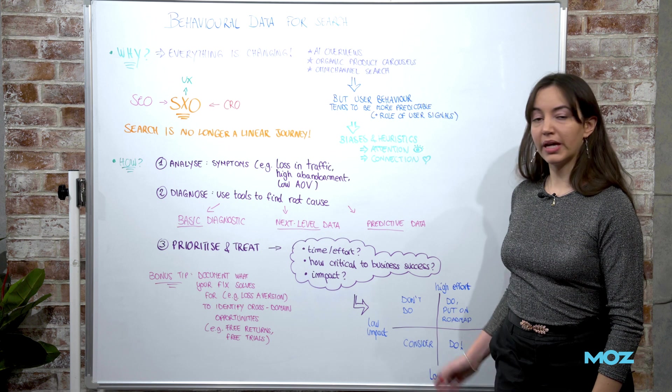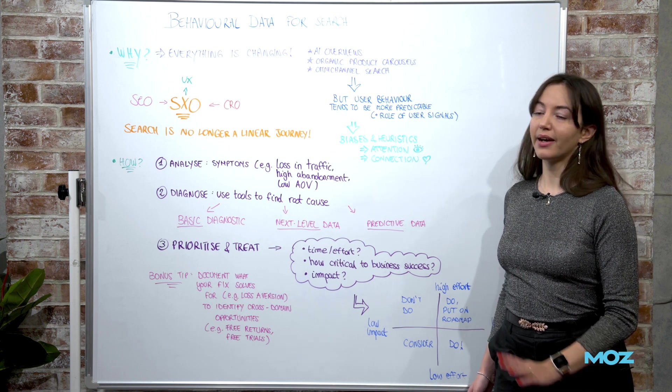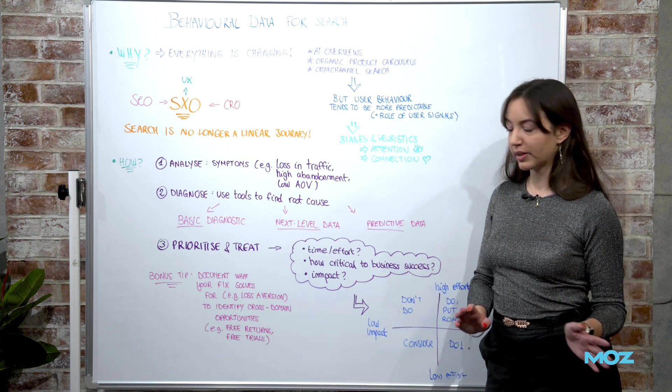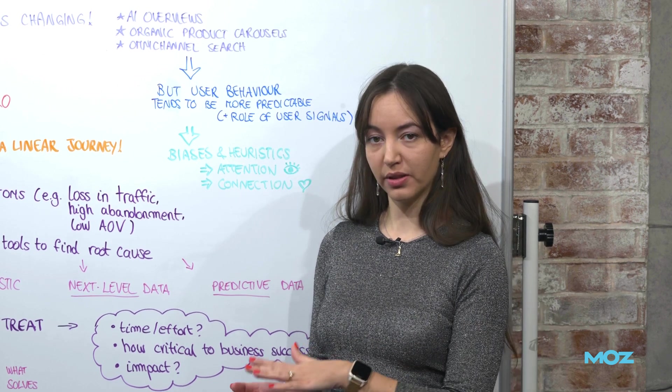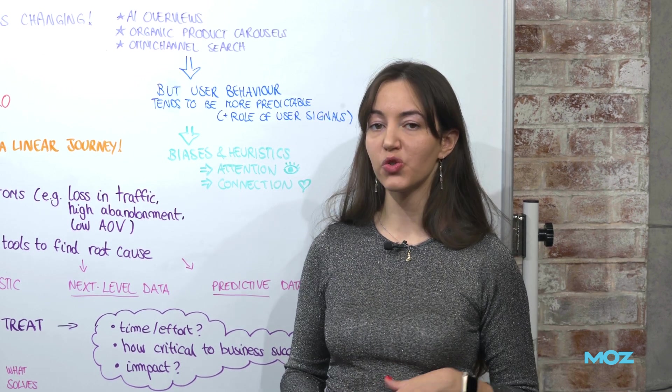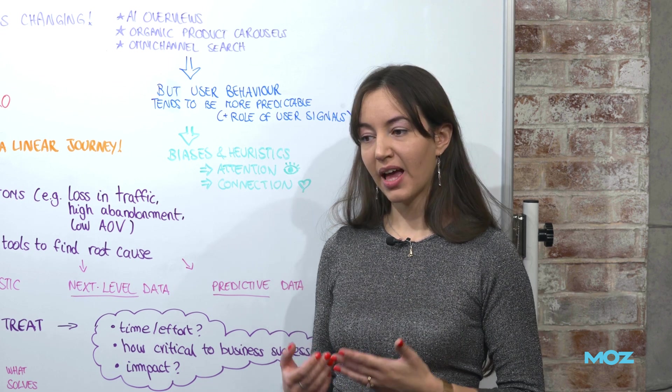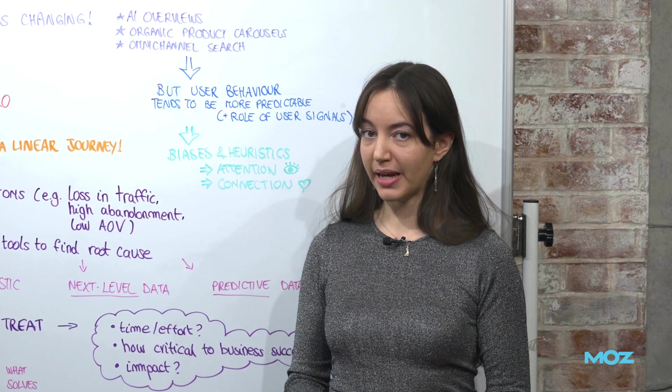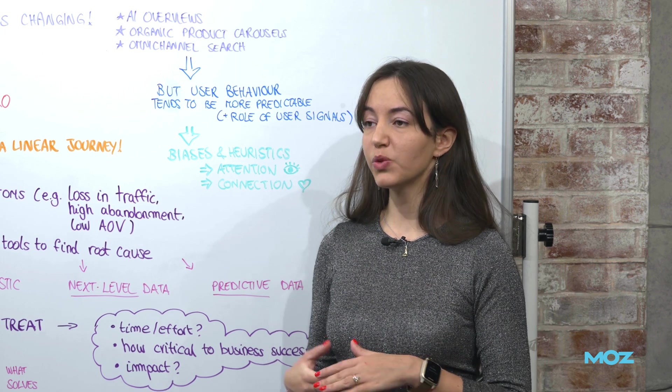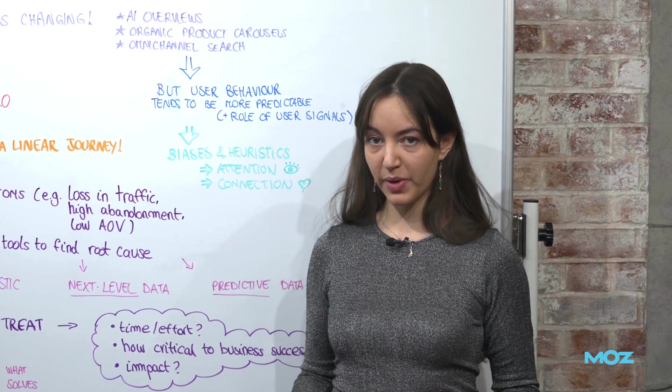And everything with lower impact will be either not done or done later down the line. And my bonus tip is to document not only your fix for that specific instance, but also what does the fix actually solve at a deeper level? What is the user need or user bias that it solves for? Because this will allow you to find new opportunities in other domains.